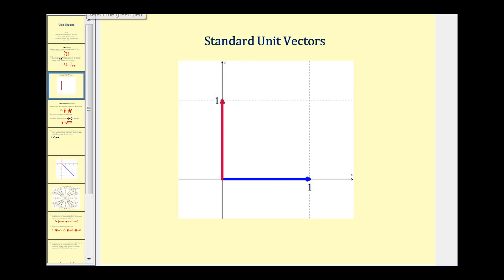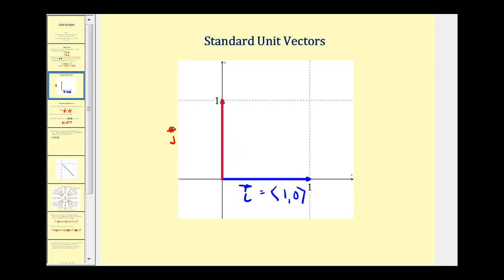Here's an illustration of vector i along the positive x-axis, and here's a graph of vector j, which is one unit along the positive y-axis.